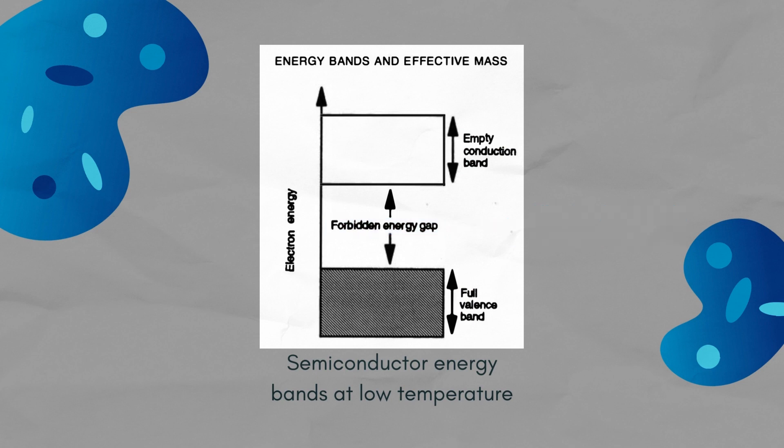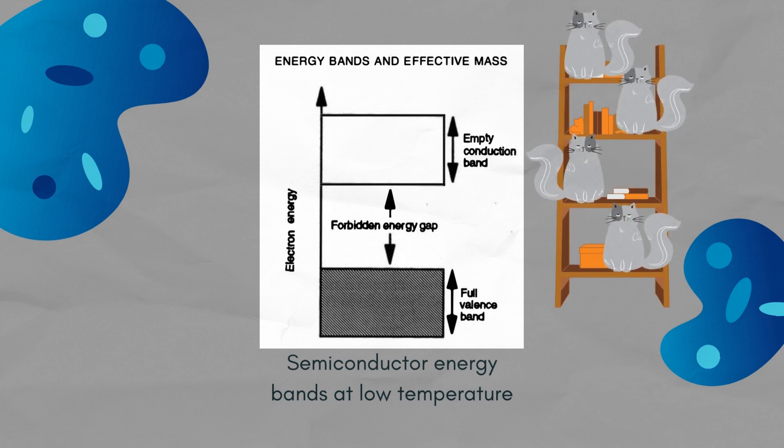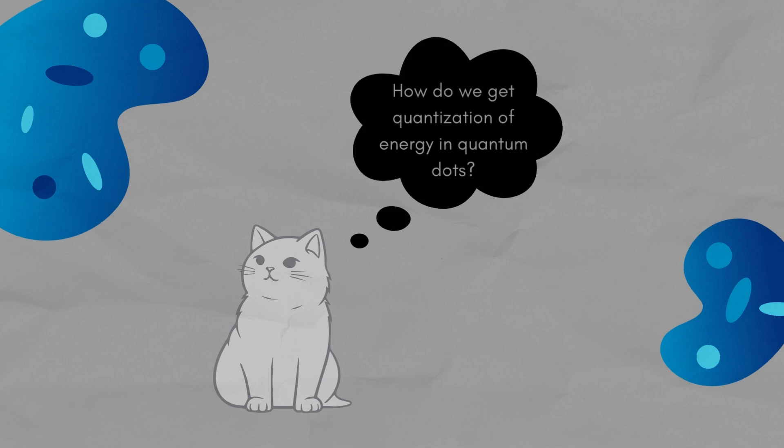Despite this, the energy level of bulk semiconductors are not quantized, meaning that the cat we described earlier can jump to just about anywhere on the shelf. So how do we get quantization of energy in quantum dots?